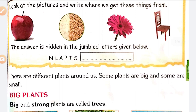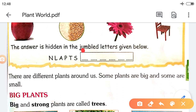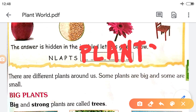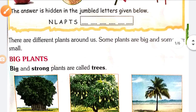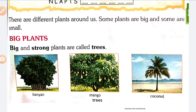The answer is hidden in the jumbled letters given below. The letters N-L-A-P-T spell P-L-A-N-T. Yes, it is a plant. So apples, cereals, food grains, and furniture — all these things we get from the plant. There are different plants around us.